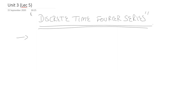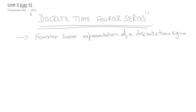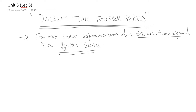Please make a note that the Fourier series representation of a discrete time signal is a finite series, while the Fourier series representation of a continuous time signal is an infinite series. We have already seen the mathematical expressions for the continuous case, and soon we will see the mathematical expression for the discrete time Fourier series.